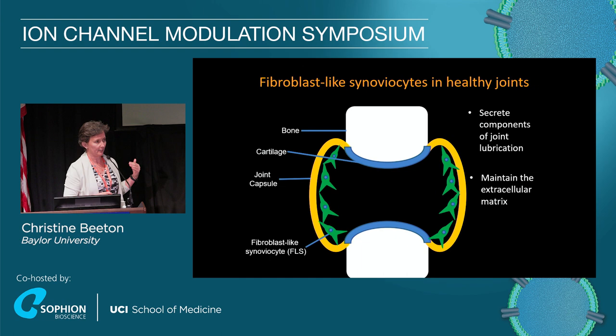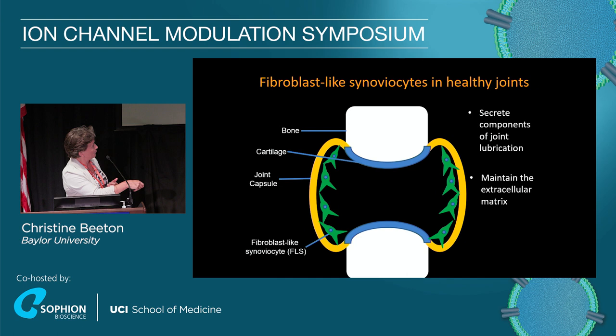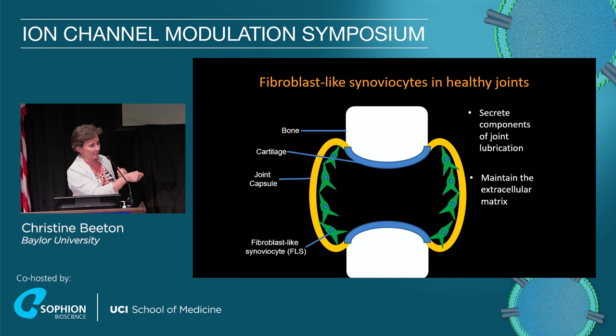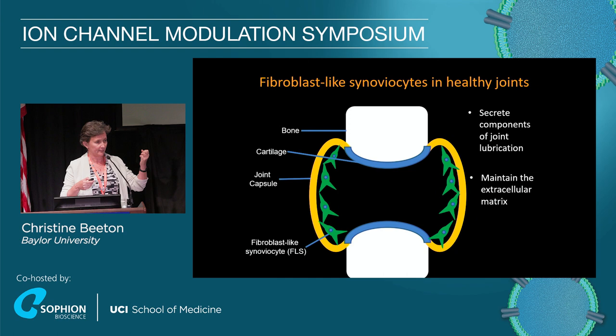If I talk to you about rheumatoid arthritis, you're probably going to think about joints, and you would be correct. If you look at the structure of a healthy joint, drawn here in white are the bones. You have the space in between that allows free movement, cartilage that cushions the bones, and then a very thin layer of cells — fibroblast-like synoviocytes, which I'm going to call FLS.